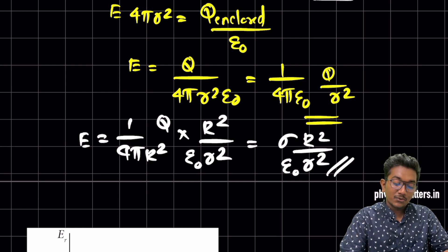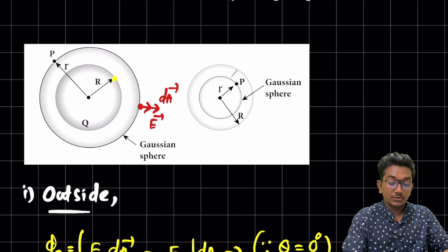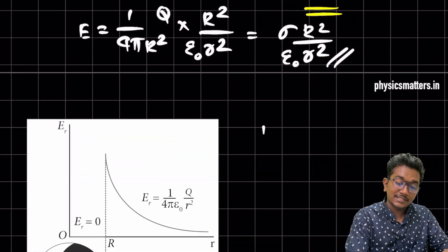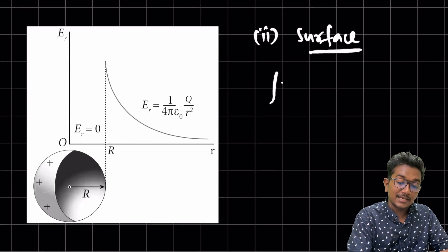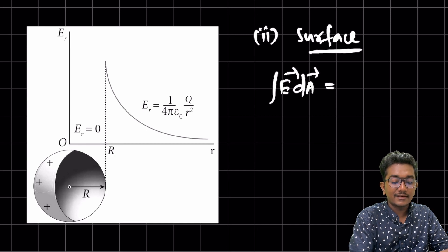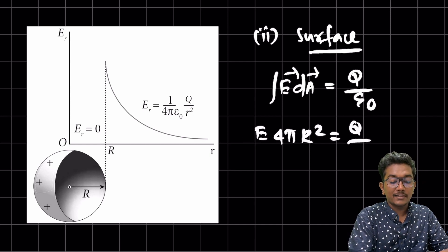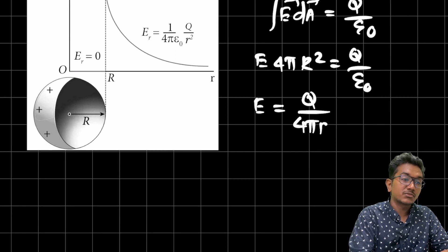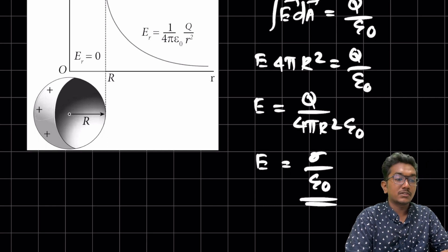Now for the second case: on the surface. Here the radius equals capital R. Applying Gauss's law, E times 4πR² equals Q divided by ε₀, so E equals Q divided by 4πR²ε₀, which simplifies to E equals sigma divided by ε₀. Simple and done.